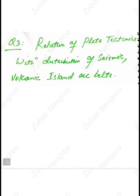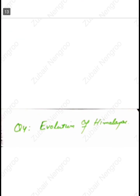The third question in Unit 4 is the relation of plate tectonics with distribution of seismic, volcanic, and island arc belts. The last question is the evolution of the Himalayas. So this was all about the guess paper of geology for BG fifth semester students. Thank you for your cooperation.